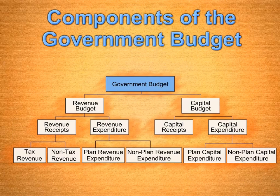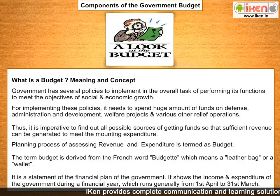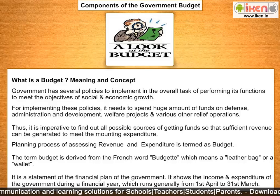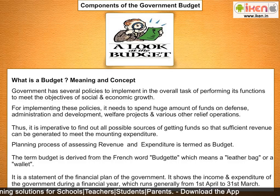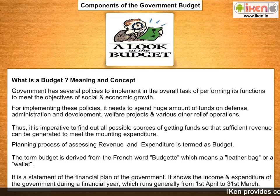Components of the government budget. What is a budget? The government has several policies to implement in the overall task of performing its functions to meet the objectives of social and economic growth. For implementing these policies, it needs to spend huge amounts of funds on defense, administration, development welfare projects, and various other relief operations. The process of assessing revenue and expenditure is termed as budget.